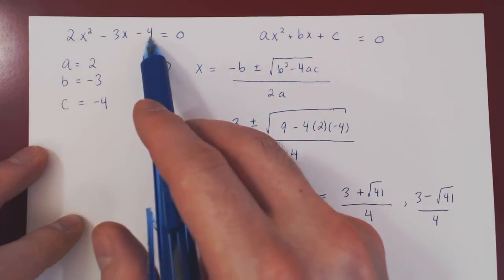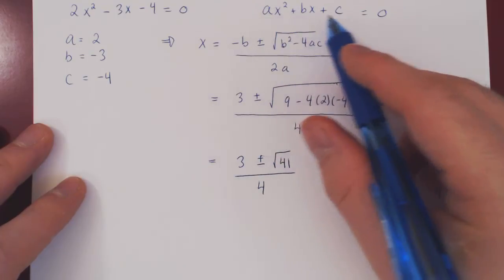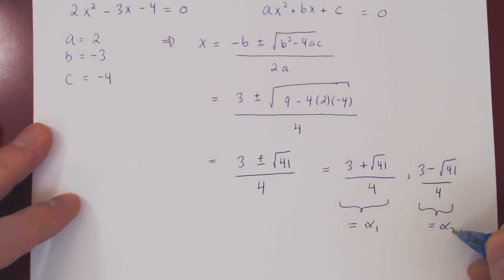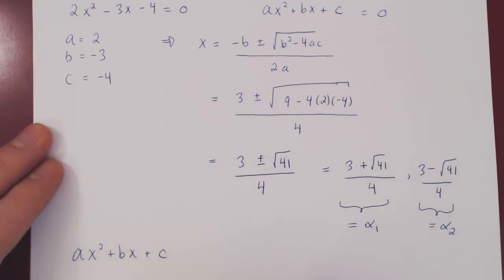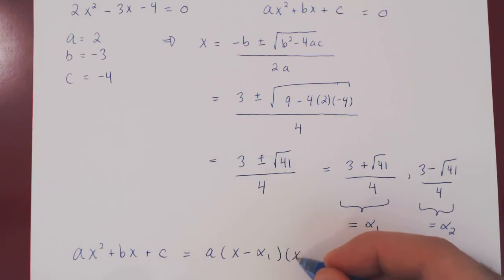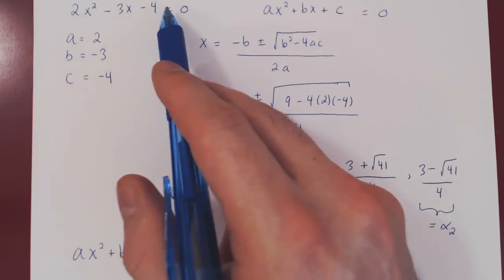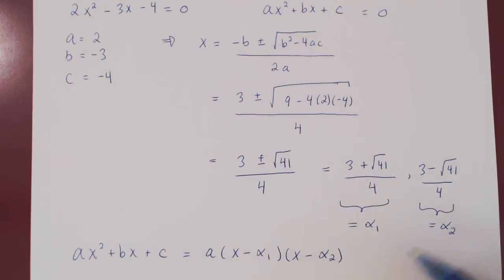What about factoring this quadratic? If you have an arbitrary quadratic polynomial and you have the two zeros — call them alpha 1 and alpha 2 — then your quadratic ax squared plus bx plus c factors nicely as a times x minus alpha 1, times x minus alpha 2. So once you have the two zeros of a quadratic polynomial, factoring it is quite easy: pull out the coefficient of x squared, and the two factors are x minus each of the two zeros.